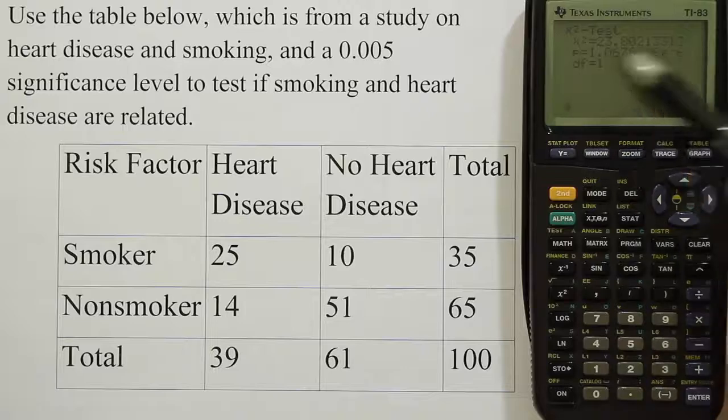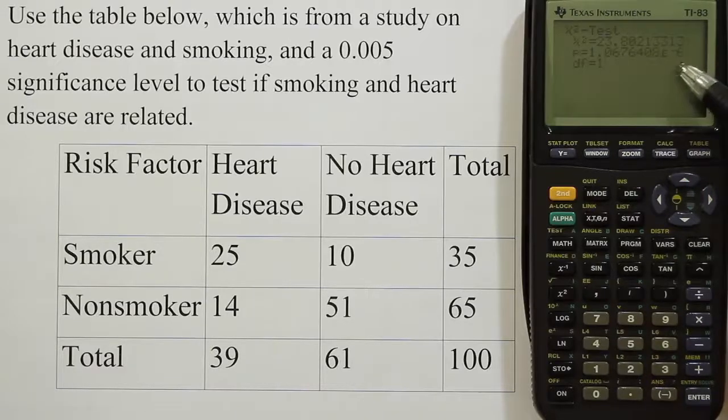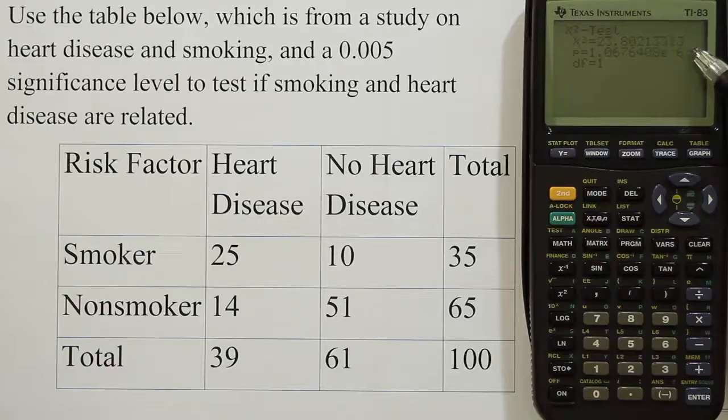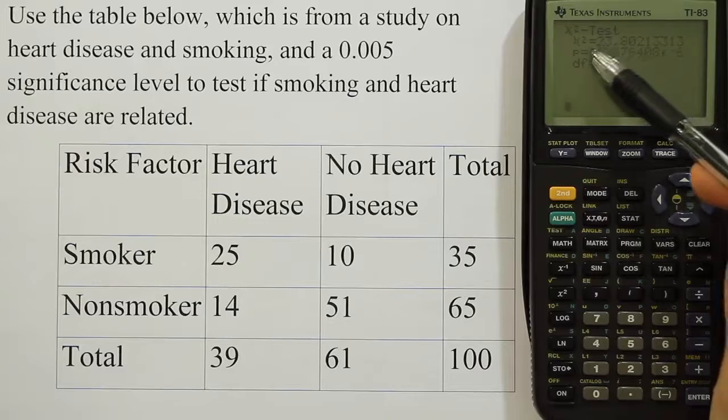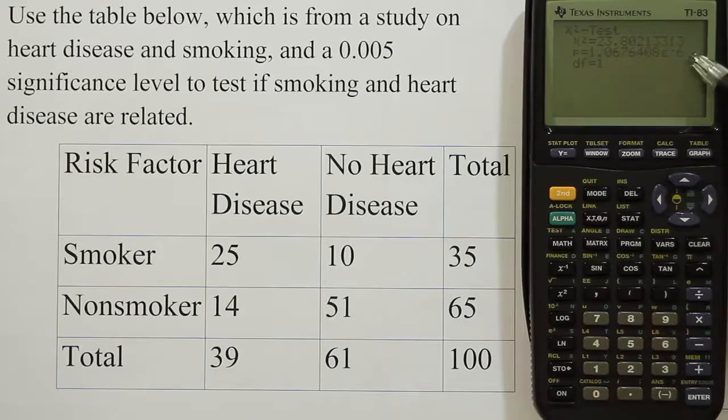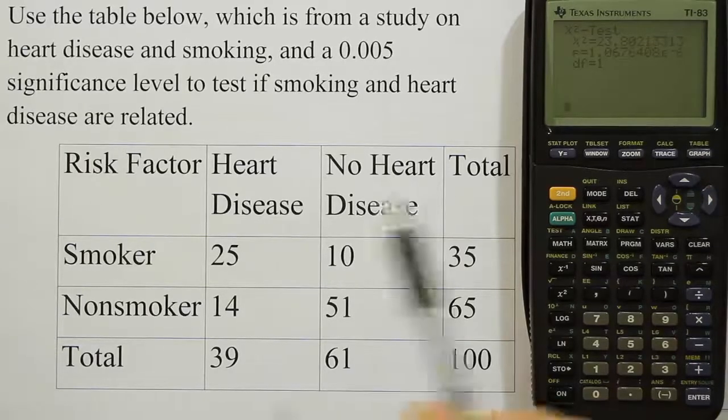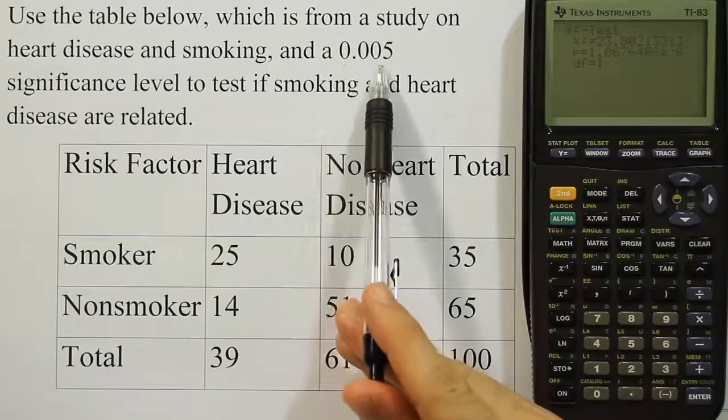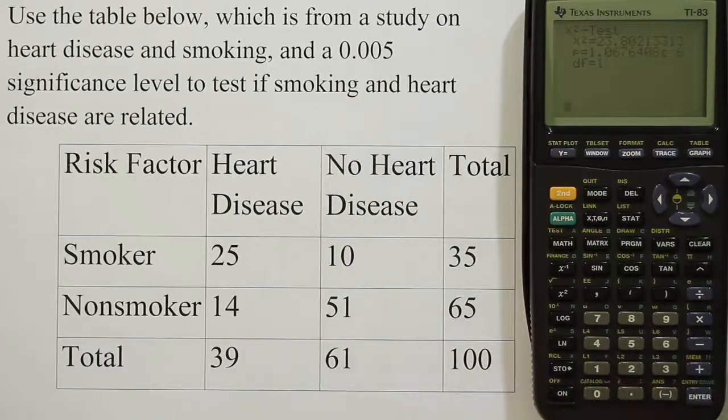Or I could look at the p-value it's calculated. This p-value is very small. It has e to the negative 6 in scientific notation—that's basically saying it's got five zeros. So it's got a decimal point, five zeros, and then the digits 107. So it's practically zero. The p-value is very small, much smaller than our significance level. So we would conclude that we reject the null hypothesis.